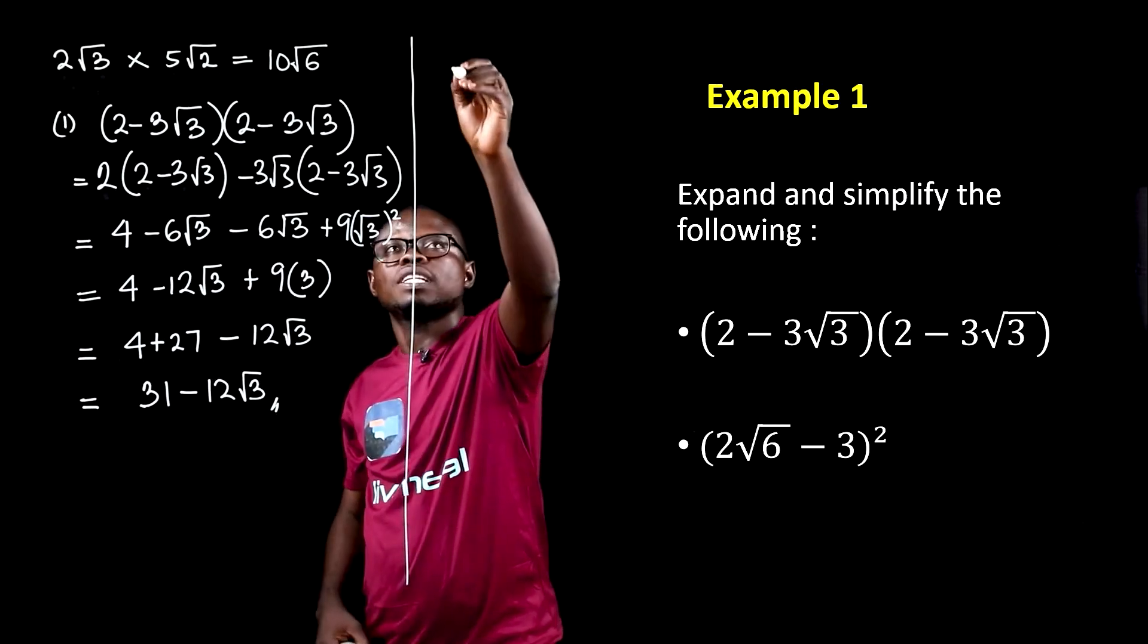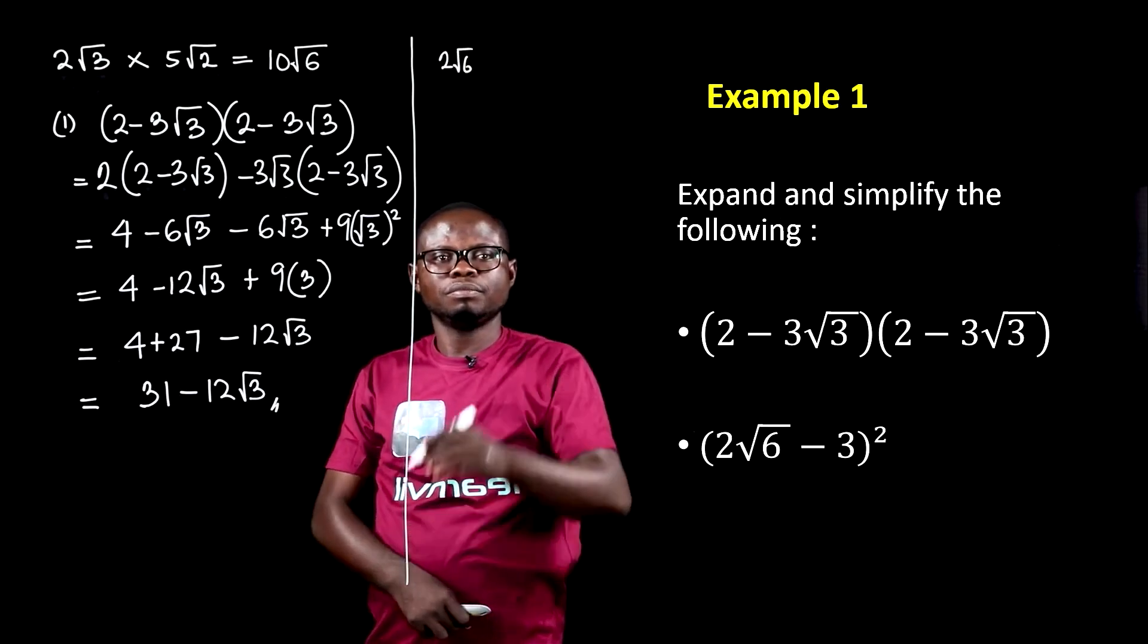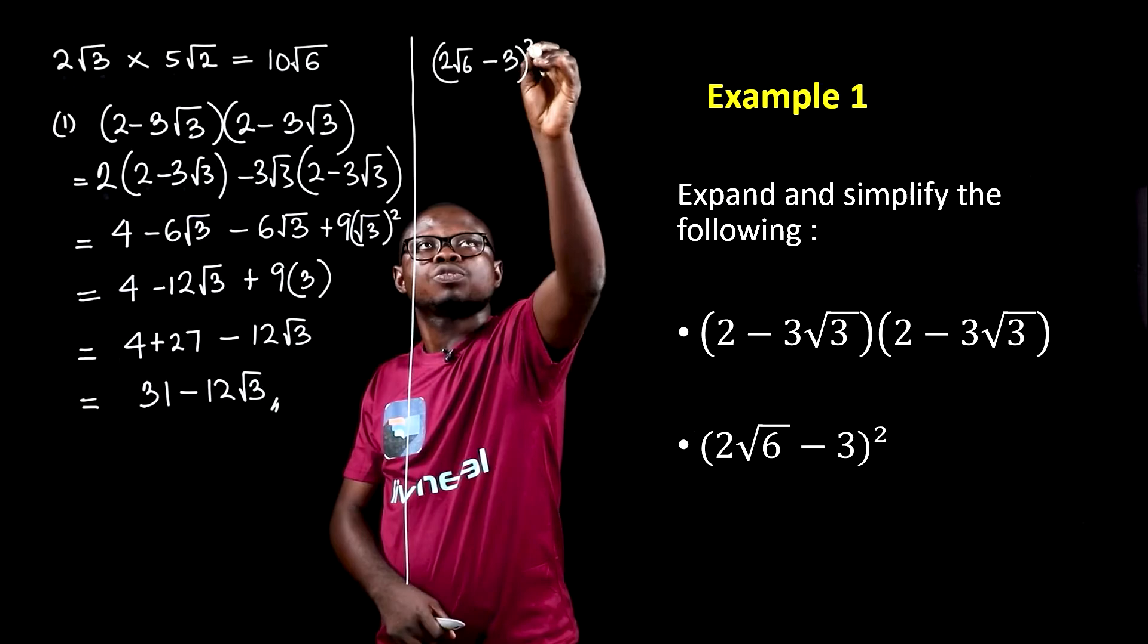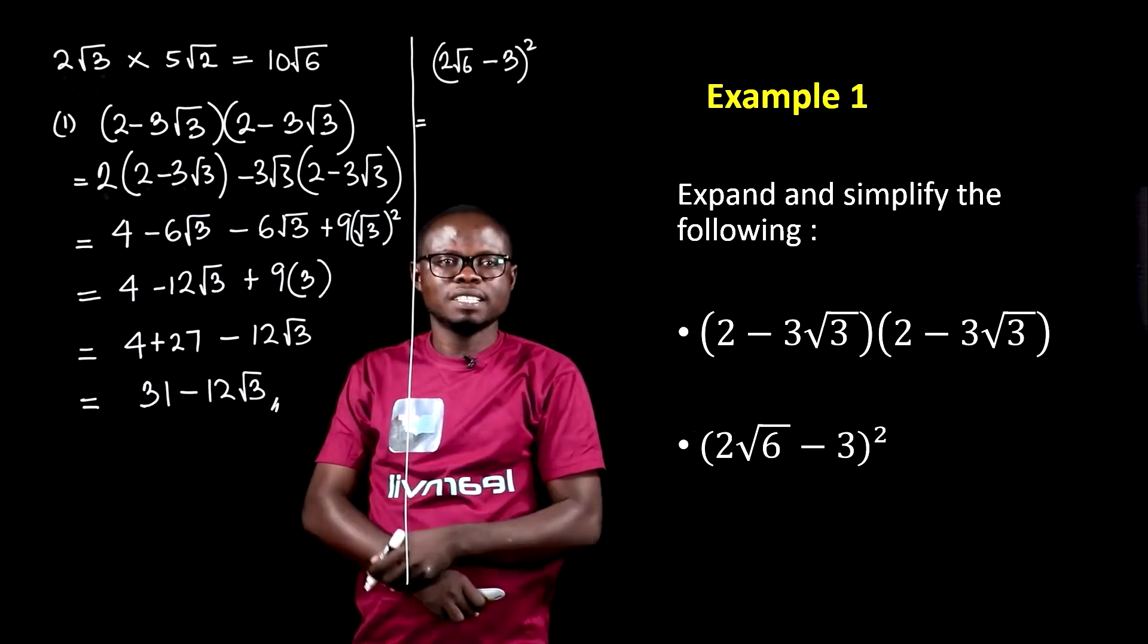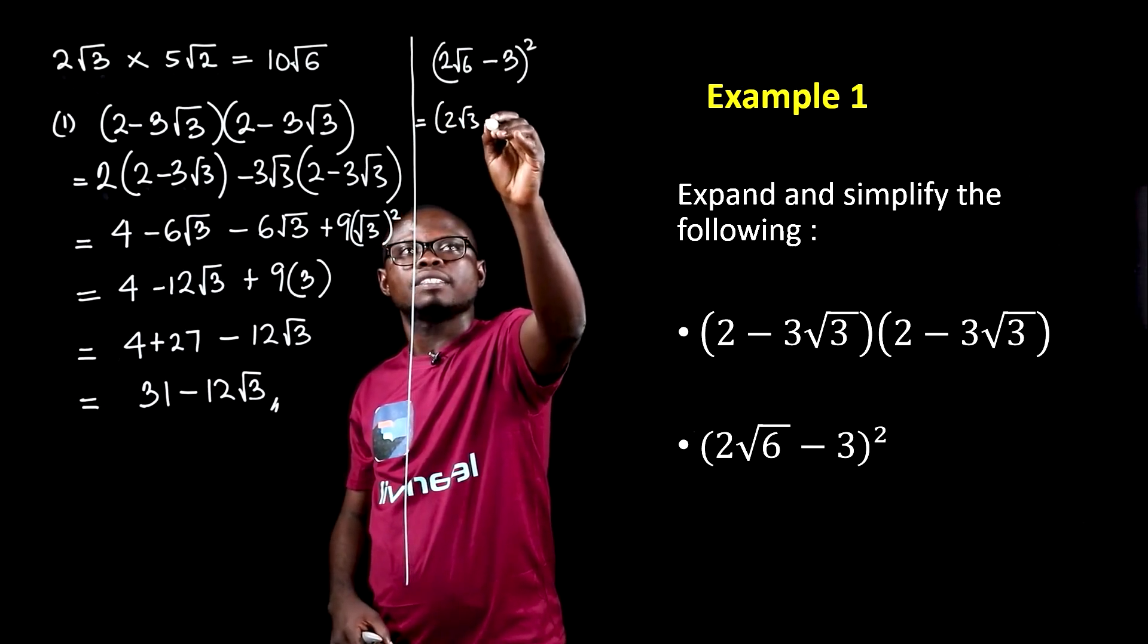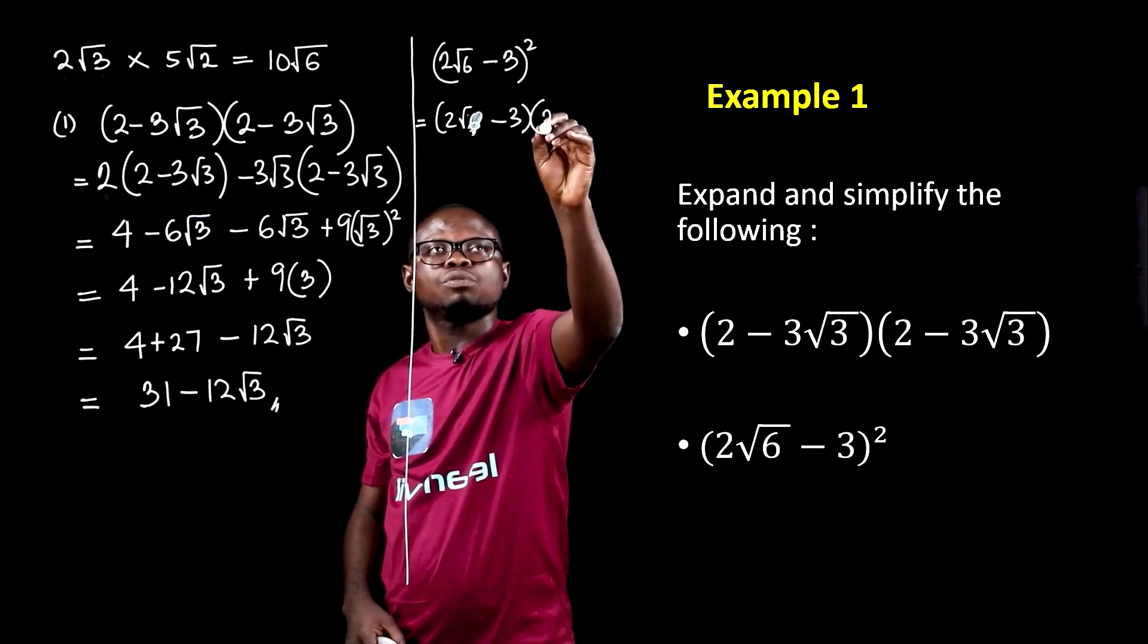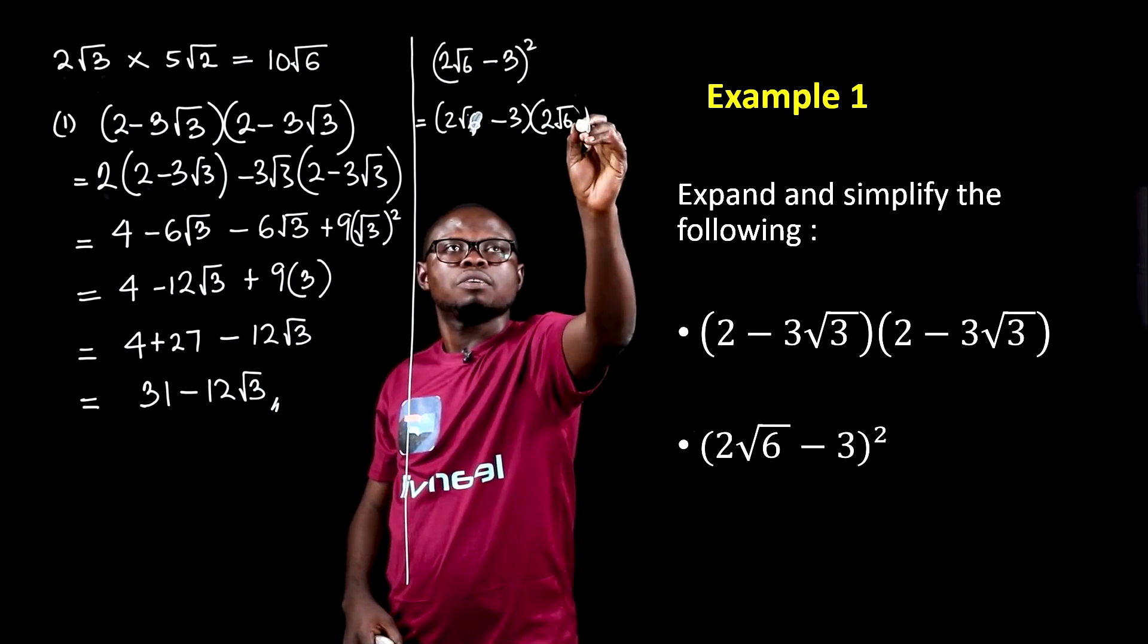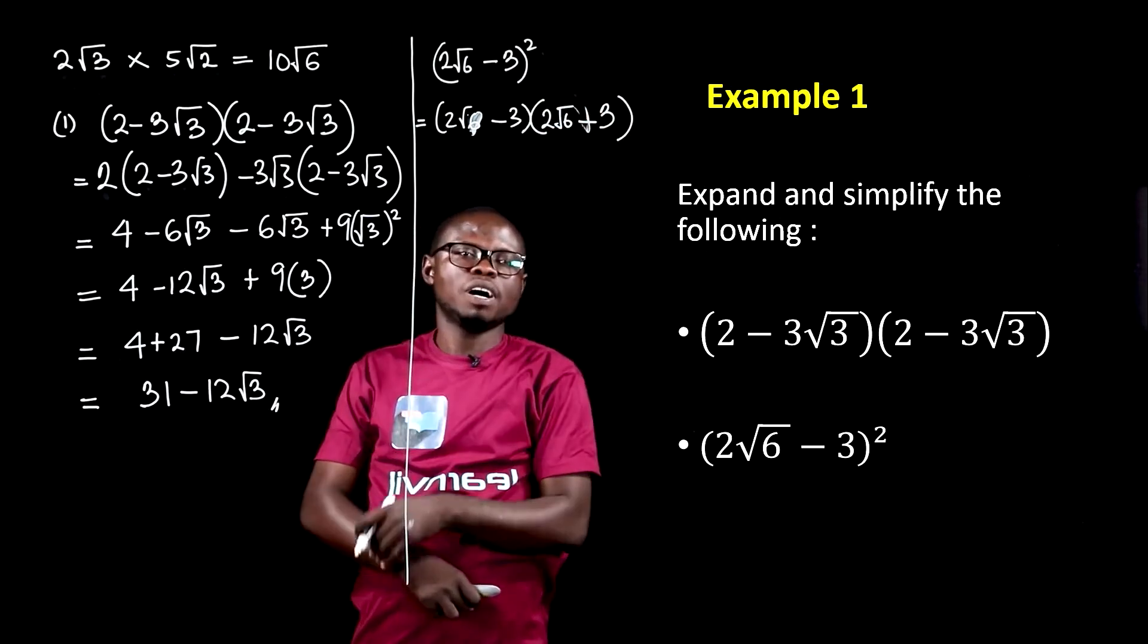Great. So the next one is 2 root 6 minus 3 all squared. This can be expanded as 2 root 6 minus 3 times 2 root 6 minus 3 because of the power of 2.